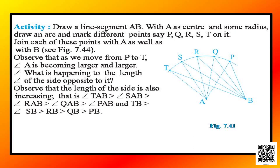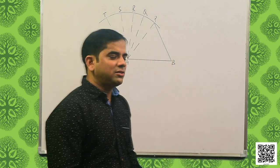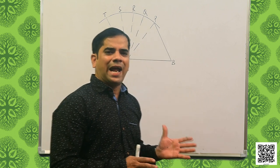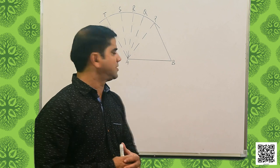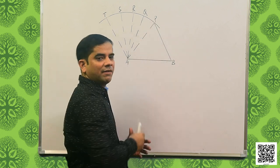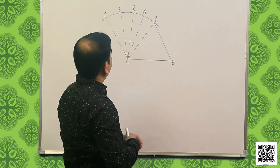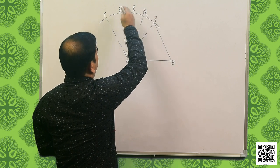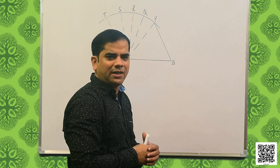Let us perform another activity. Draw a line segment AB; with A as center and some radius, draw an arc and mark different points P, Q, R, S, T on it. I have drawn the diagram as given in your book. The radius is AP and the points P, Q, R, S, T lie on the same arc. Join these points with A, and also join them with point B.